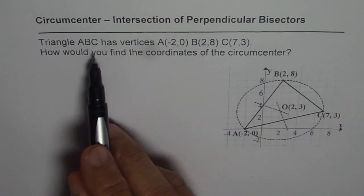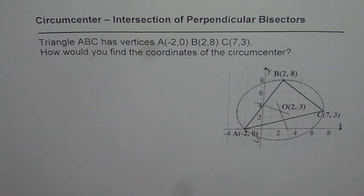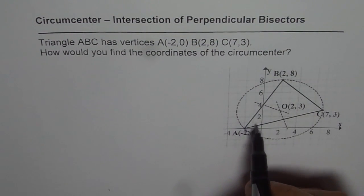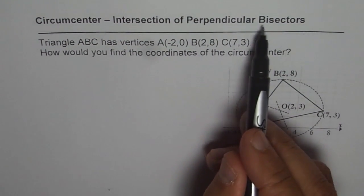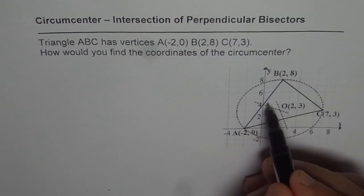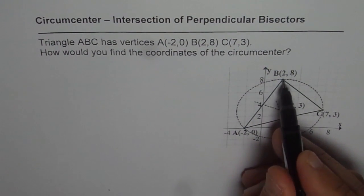The question is: triangle ABC has vertices A(−2, 0), B(2, 8), and C(7, 3). How do you find the coordinates of the circumcenter? The circumcenter is the point where all the perpendicular bisectors of the triangle meet. We are given these three vertices and need to find the equations of the perpendicular bisectors — lines that pass through the midpoint of each side and are perpendicular to that side.